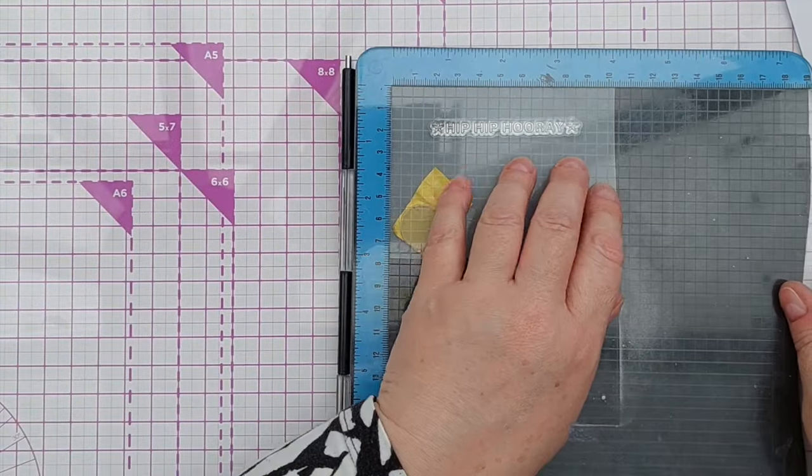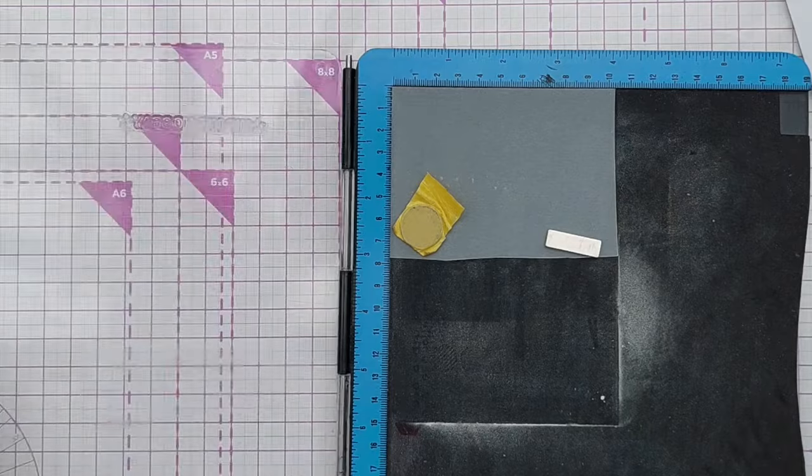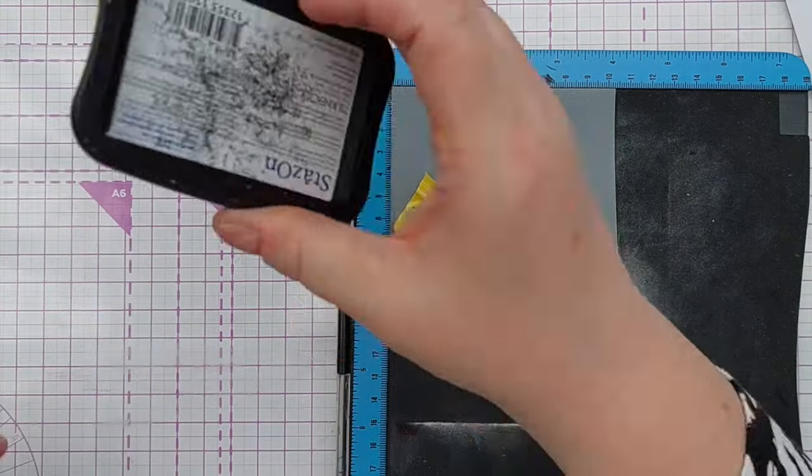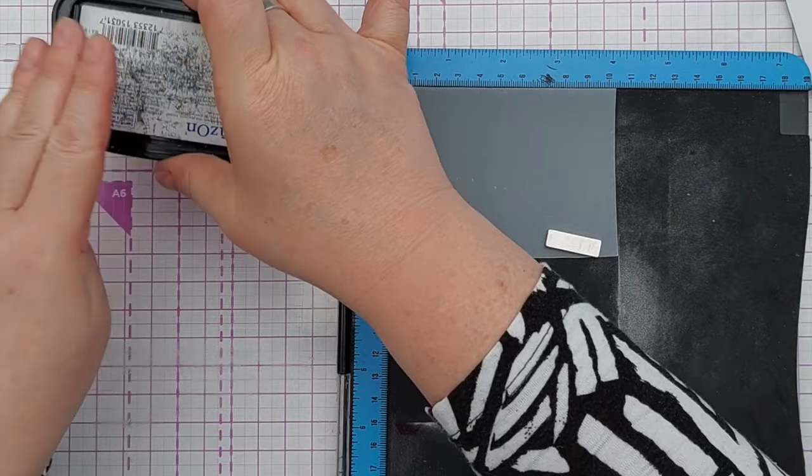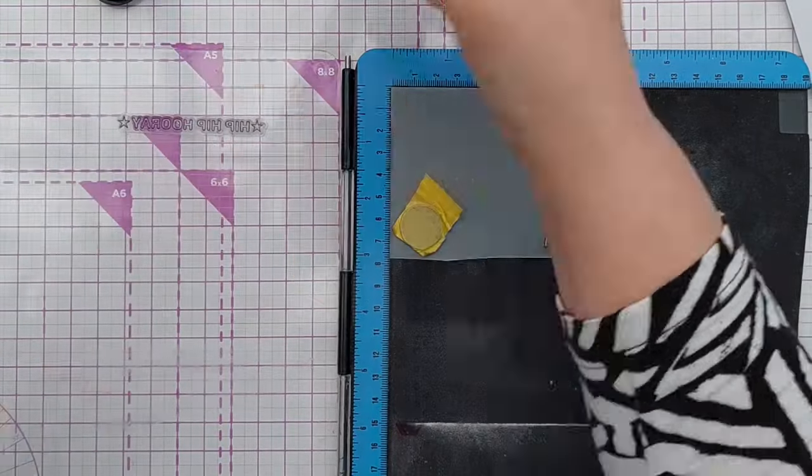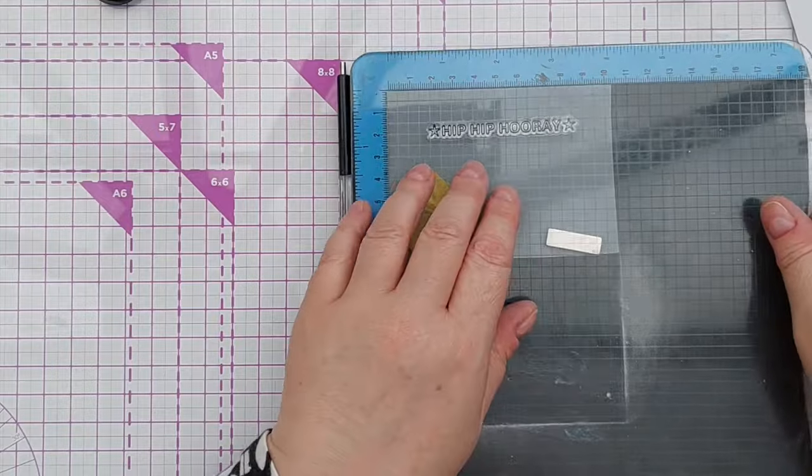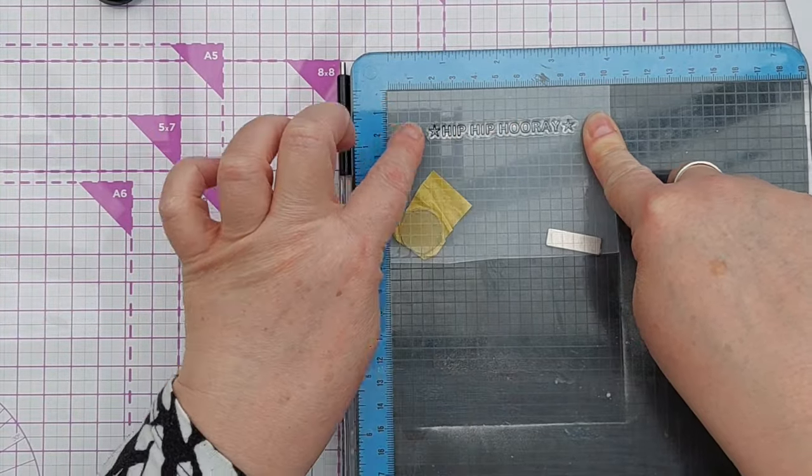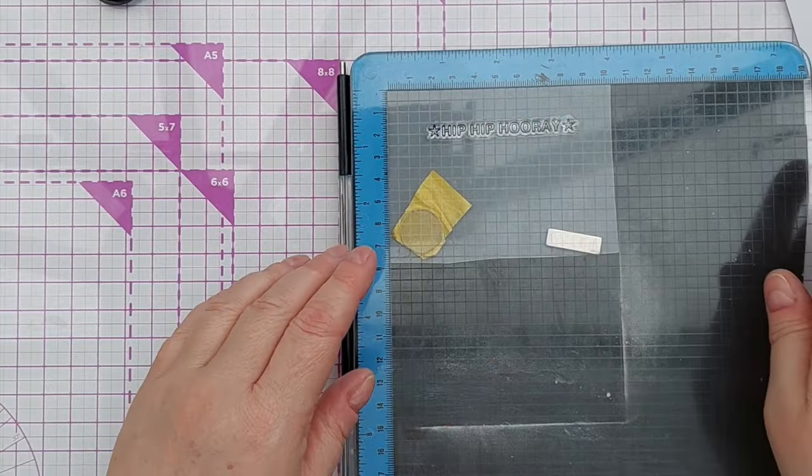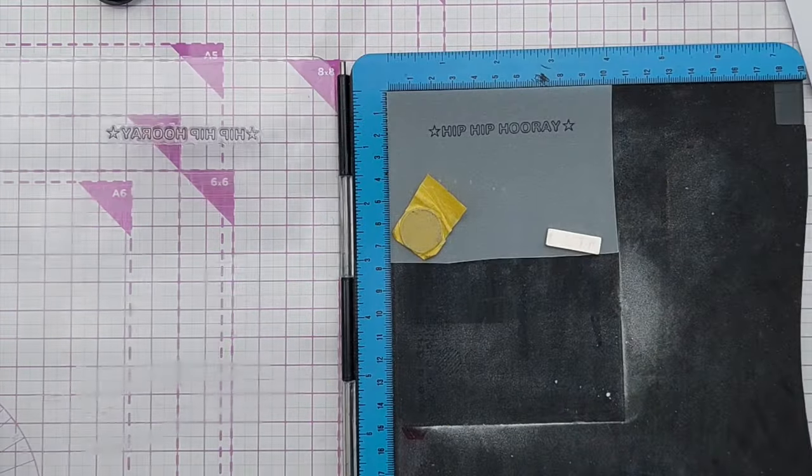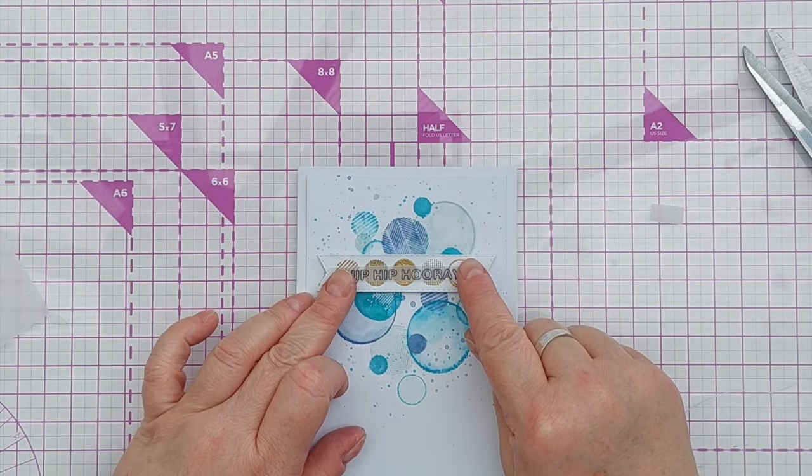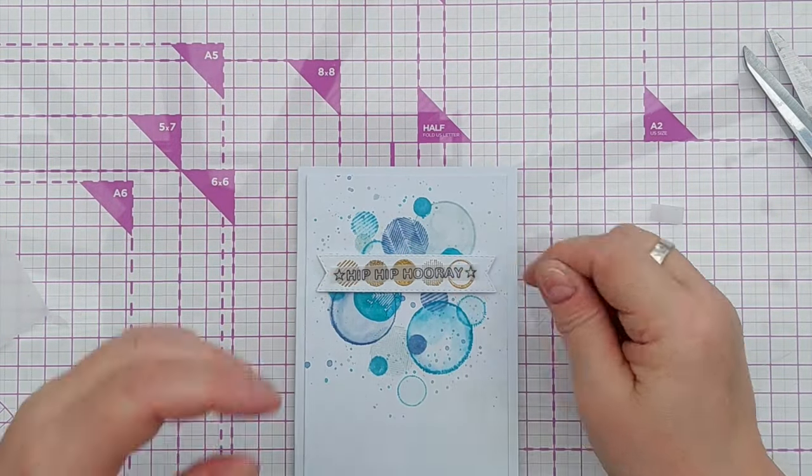And I'm going to stamp it on vellum using StazOn because that's a good black ink for stamping on vellum. You don't want to press down too hard because it's an outline stamp—I don't want to smush the outline. I think that's good enough. So although the vellum dulls the gold behind it, you've still got a bit of gold peeking out and the gold isn't too much.